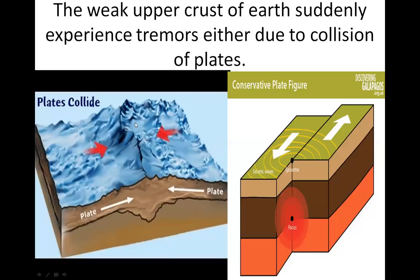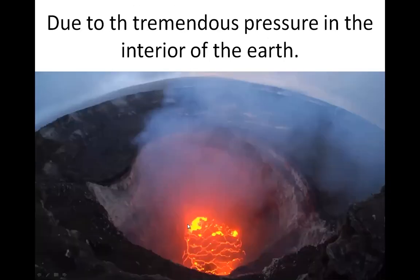Now we will cover the earthquake part. The weaker upper crust of the earth suddenly experiences tremors either due to collision of the plates — when plates move against each other, this is called plate collision, and a weak earthquake takes place — or due to tremendous pressure when the plates are moving towards or against each other.